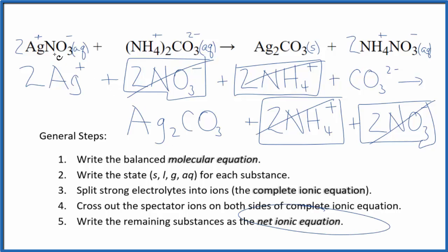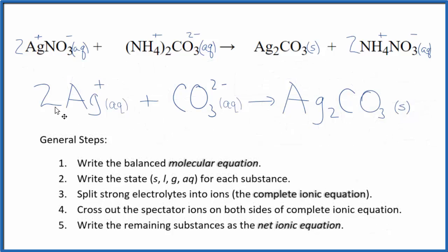That's the net ionic equation for AgNO3 plus (NH4)2CO3. Let me clean it up. Write the states. We'll have our net ionic equation. So this is the balanced net ionic equation for silver nitrate plus ammonium carbonate.